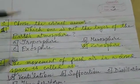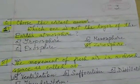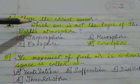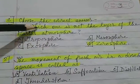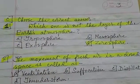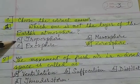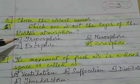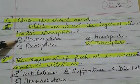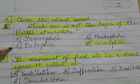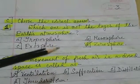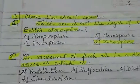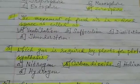Choose the correct answer. Number 1: which one is not the layer of the earth's atmosphere? Options: A) troposphere, B) mesosphere, C) exosphere, D) zerosphere. The answer is option D, zerosphere — it is not a layer of the earth's atmosphere.